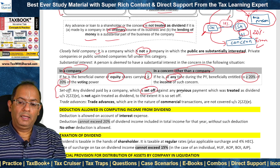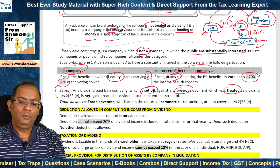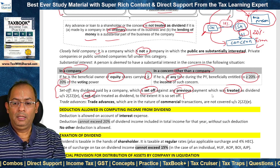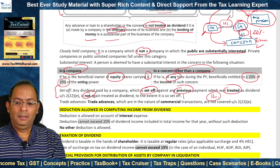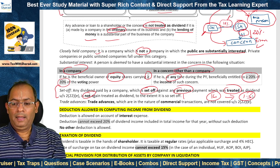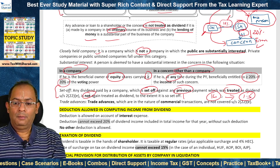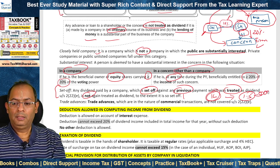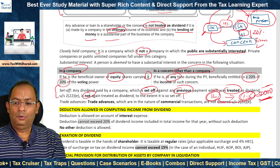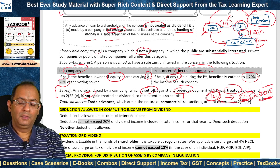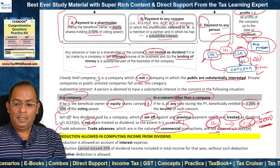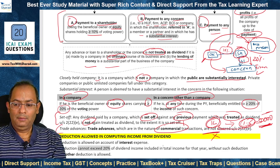Any dividend paid by a company which is set off against any previous payment treated as dividend under Section 2(22)(e) is not again treated as dividend to the extent it is so set off. For example, if a loan of ₹1 lakh was treated as deemed dividend under 2(22)(e) and subsequently a regular dividend of ₹1.5 lakh is declared, then the ₹1 lakh set off will not be treated as dividend again — only the excess ₹50,000 will be taxable. This is to avoid double taxation. Trade advances in the nature of commercial transactions are not covered under Section 2(22)(e).